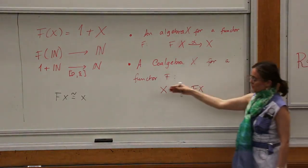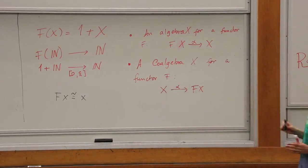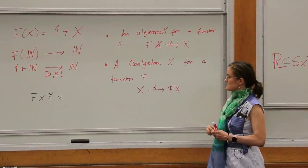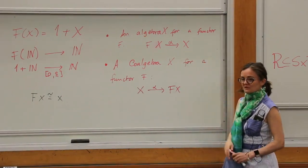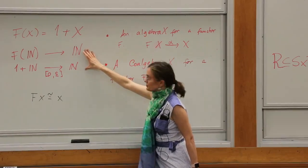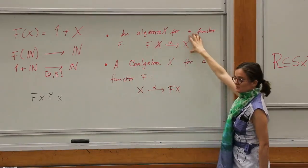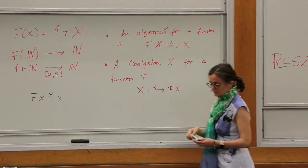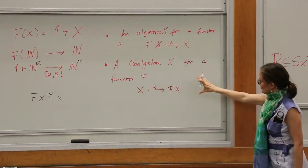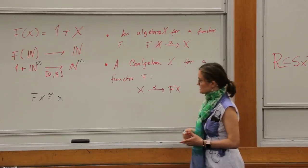This is where I'm going to stop today, but this is what we'll spend the next lecture looking at: some things are naturally defined as algebras and some as co-algebras. The objects for which you have an isomorphism between F(X) and X, and whether it's a least or greatest fixed point, is what distinguishes naturally inductive from naturally co-inductive objects. The natural numbers are an example of an initial algebra, and the natural numbers with infinity are an example of a final co-algebra. They live in the same world but have very distinct properties — we'll explore that next time.